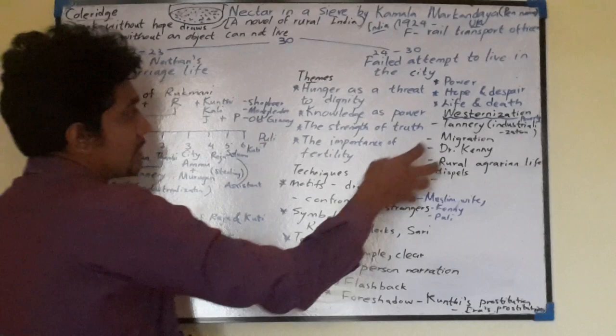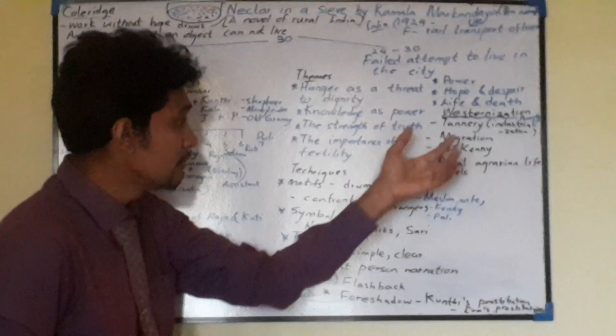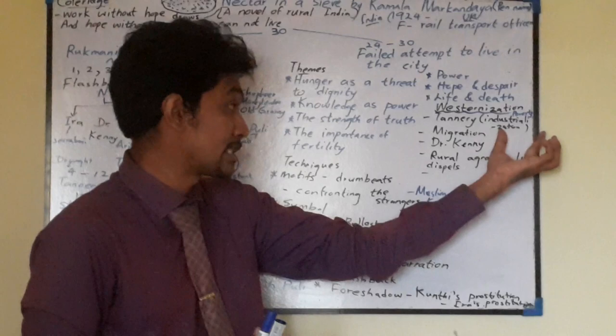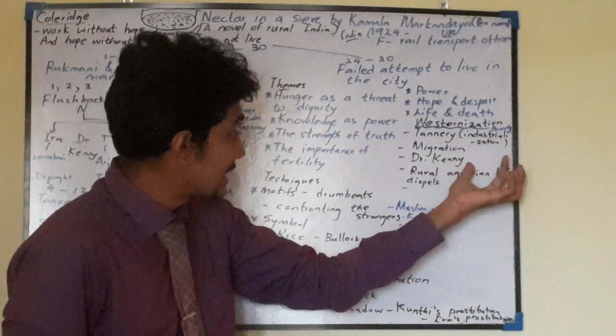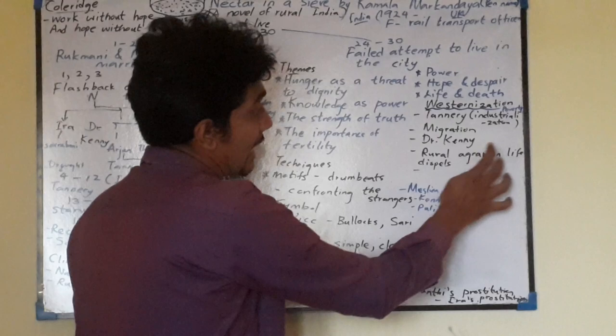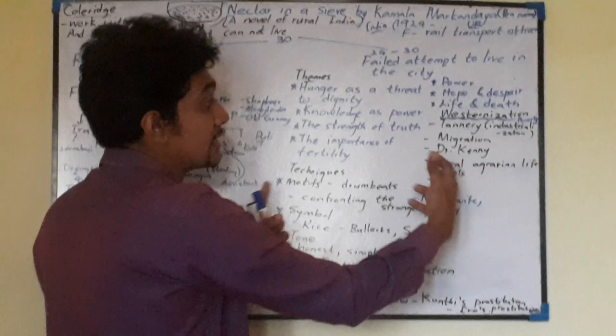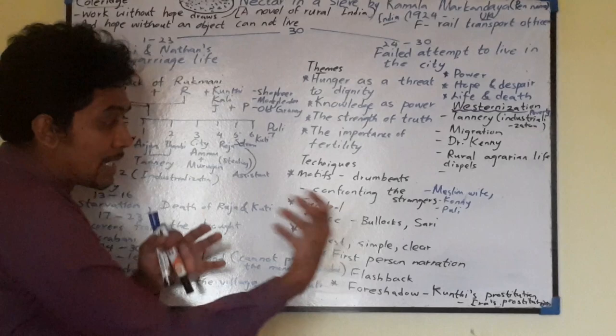The novel also deals with life and death and westernization. Westernization comes from the introduction of the character Dr. Kenny and also the introduction of the tannery, which symbolizes industrialization, encouraging industrialization and migration. Dr. Kenny's role is very significant, as rural agrarian life changes with encouraging agents like industrialization — which are somewhat invisible forces but very powerful in the novel.